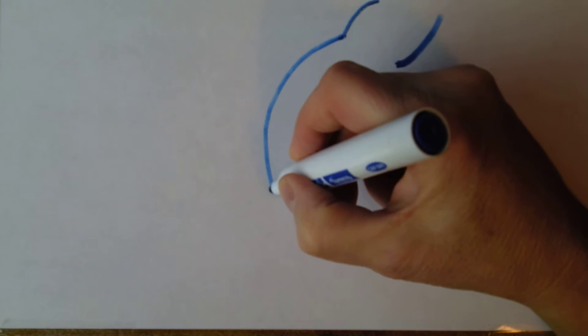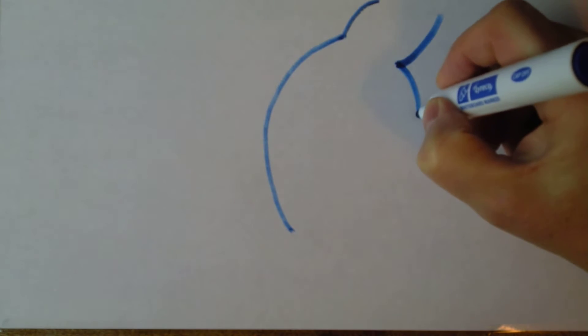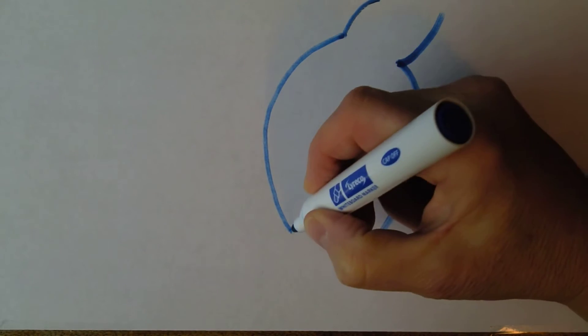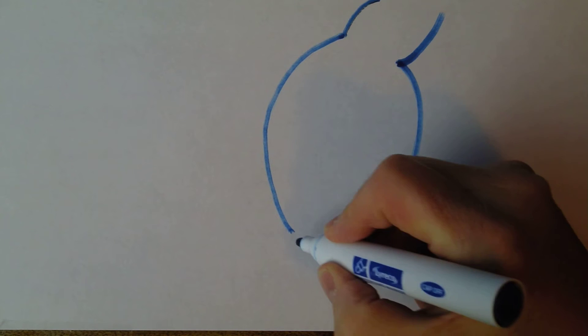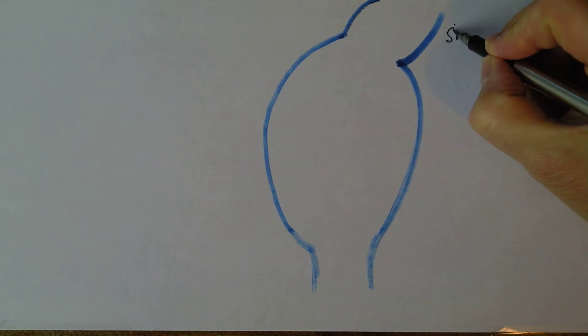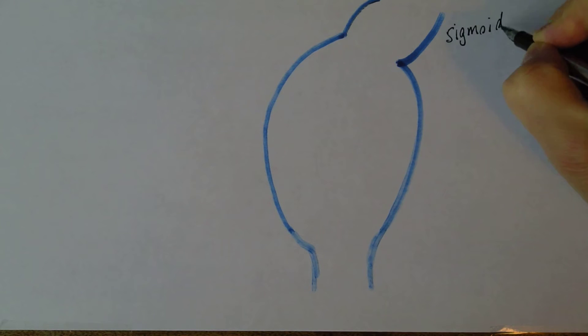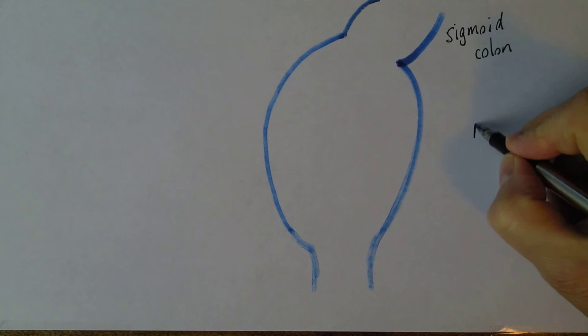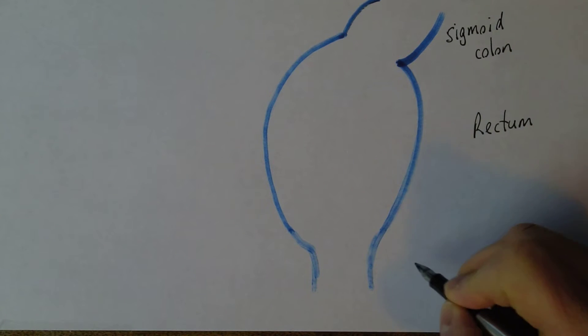Thinking about the process of defecation - the passing of the stool - here we have the end part of the sigmoid colon, which reflects through an angle into an elongated, widened part called the rectum, and that narrows again into the anal part, the anal canal. So what we have here is the sigmoid colon at the top, the rectum, and the anal canal at the bottom.